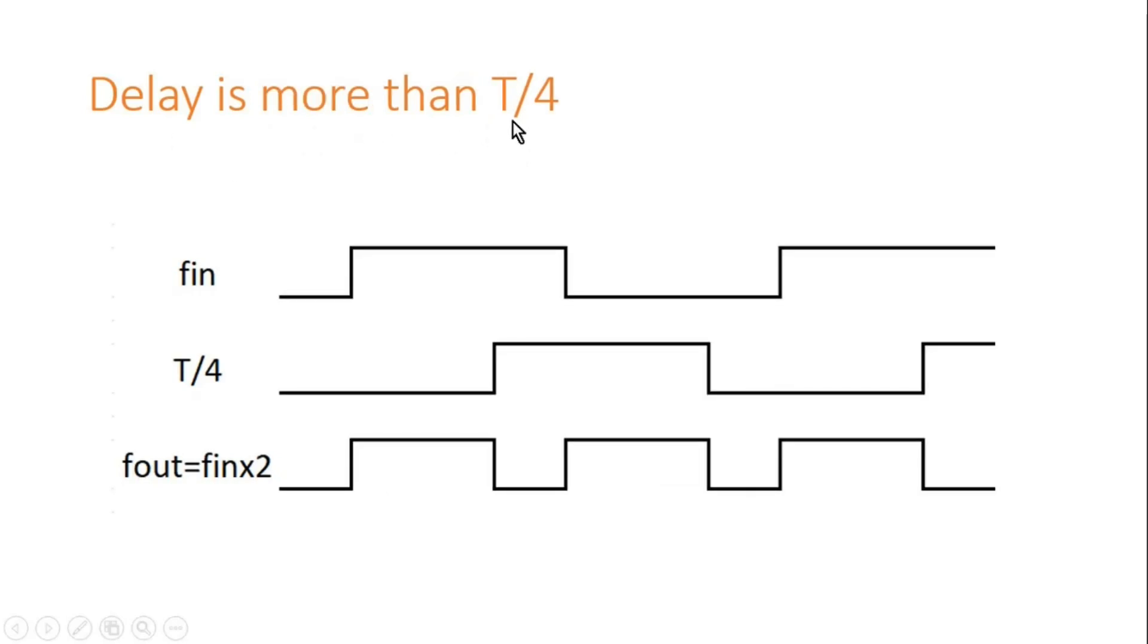If delay is more than T/4, so this signal will be delayed but slightly more than T/4. Again we are applying it to XOR gate. So if you see, this is one, this is zero, this is one, this is one, output will be zero. Again, fin is zero, T/4 is one, output is one, zero, zero, zero.